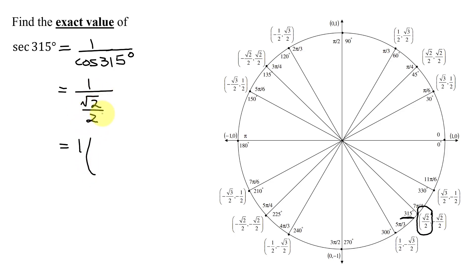How do you take a reciprocal of a fraction? You just flip it upside down, so the reciprocal is just 2 divided by the square root of 2. And 1 times 2 divided by the square root of 2 is just 2 divided by the square root of 2.